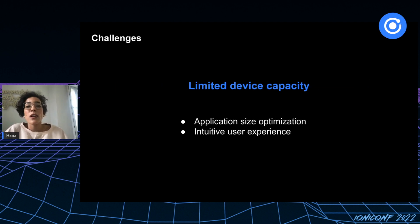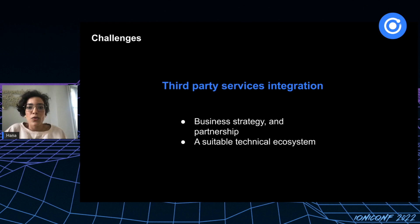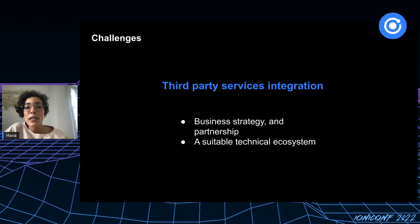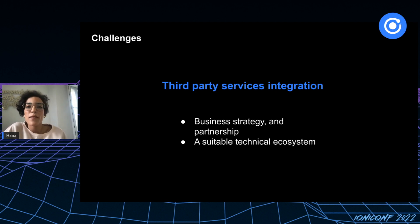One of the biggest challenges is working with partner companies to integrate their services into the super app. It's necessary to think about what the partnership strategy entails and its implications, as well as what kind of technical ecosystem the company must offer its partners so they can develop, test, and integrate their services.